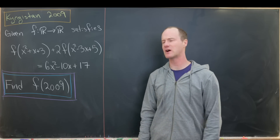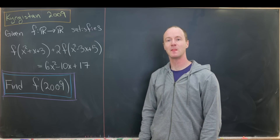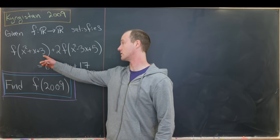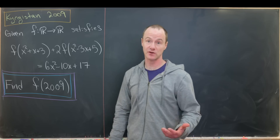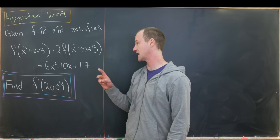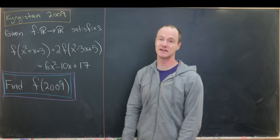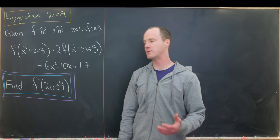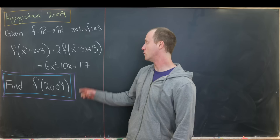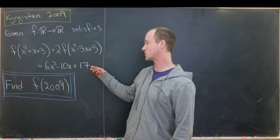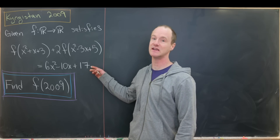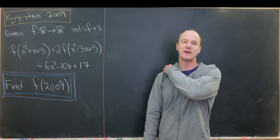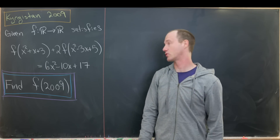So maybe what would be our first step here? We've got three polynomials built into this problem: the polynomial inside f in this first case, the polynomial inside f in the second case, and finally 6x² - 10x + 17. A logical place to start would be to try to write this 6x² - 10x + 17 as a linear combination of these two polynomials — and you'll see that we can't quite do it, but we can get pretty close.